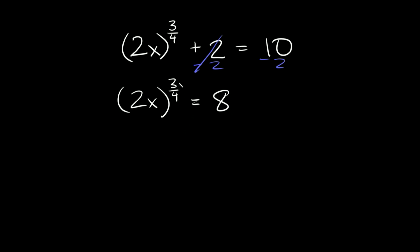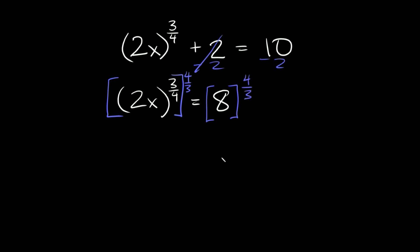In order to get rid of this fractional exponent, we have to raise everything to this exponent but flipped over — the reciprocal. So to get rid of this exponent we need to raise the whole thing to the 4/3 power. And whatever we do to one side of the equation we have to do to the other, so we raise this whole side to the 4/3 power as well.